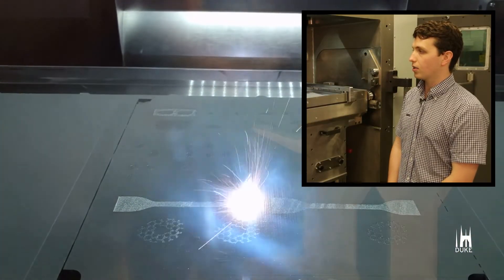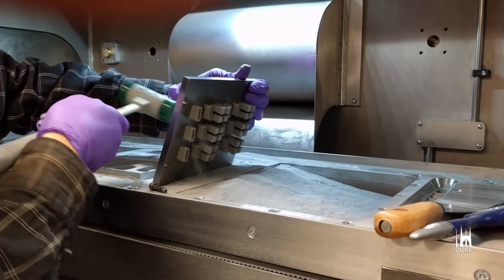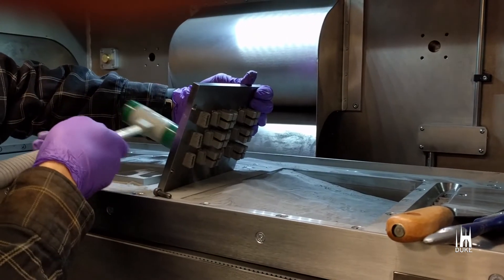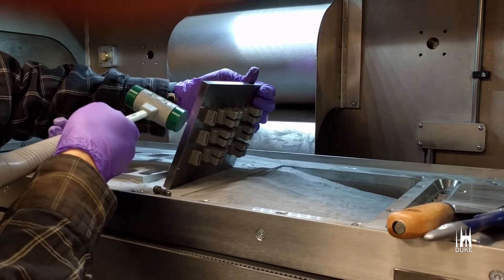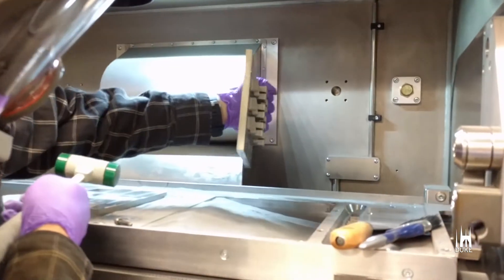It's something that many undergraduates may never get access to and I think it's unique that Duke has this. There's two senior design groups working with the printer this semester. They're both working in the medical field, so one group is making implants for large bone defects and another group making spinal cages for spinal fusion surgeries.